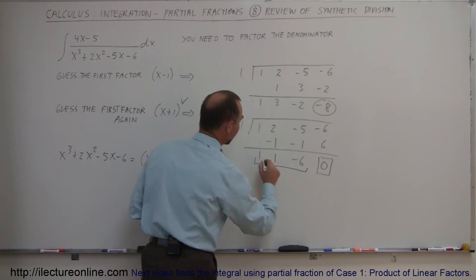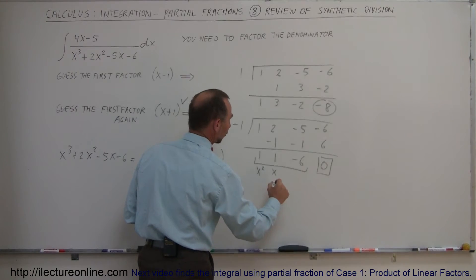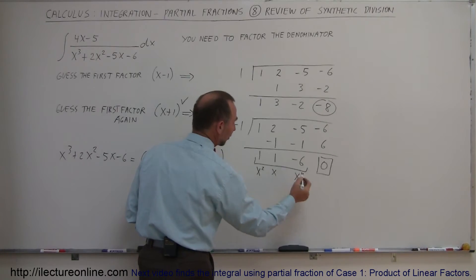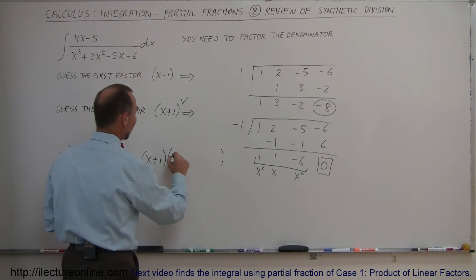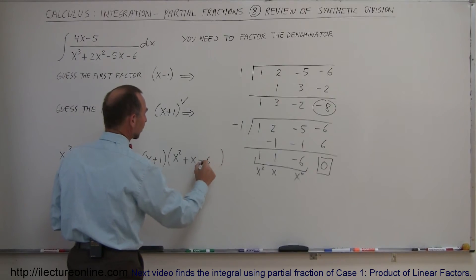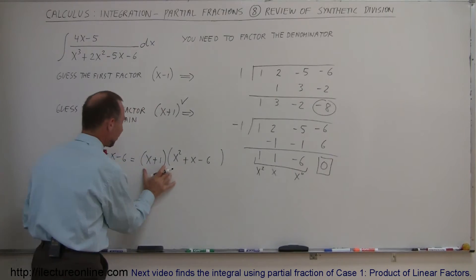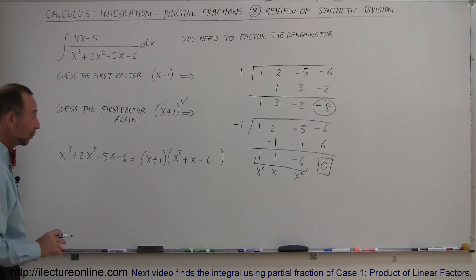What's remaining can be found by looking at these numbers right here. This is the coefficient of the x squared term, that's the coefficient of the x to the first term, and that's the coefficient of x to the 0 term. Writing over here, we get 1x squared plus 1x and a minus 6. That would be the remainder after we factor out an x plus 1, so that's why synthetic division is a pretty nice way to go.